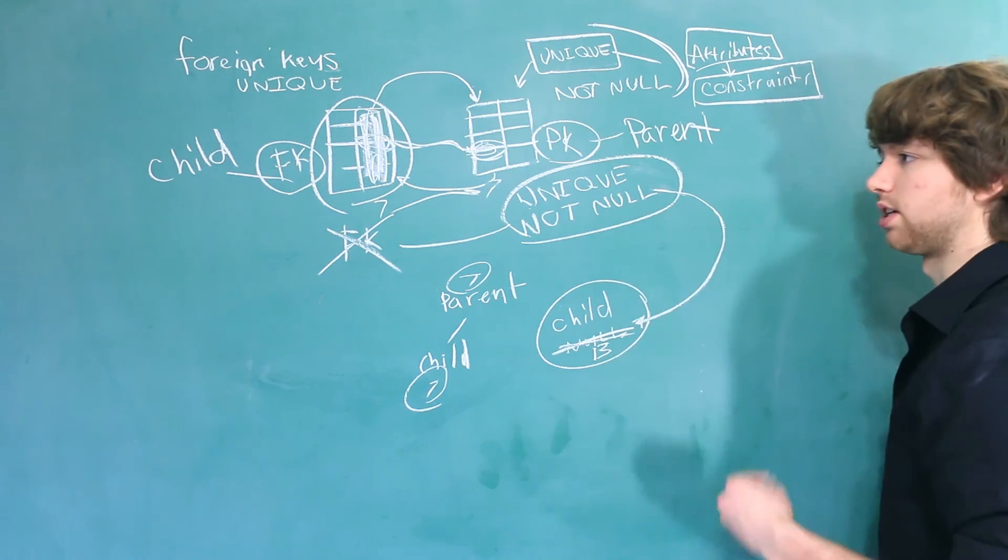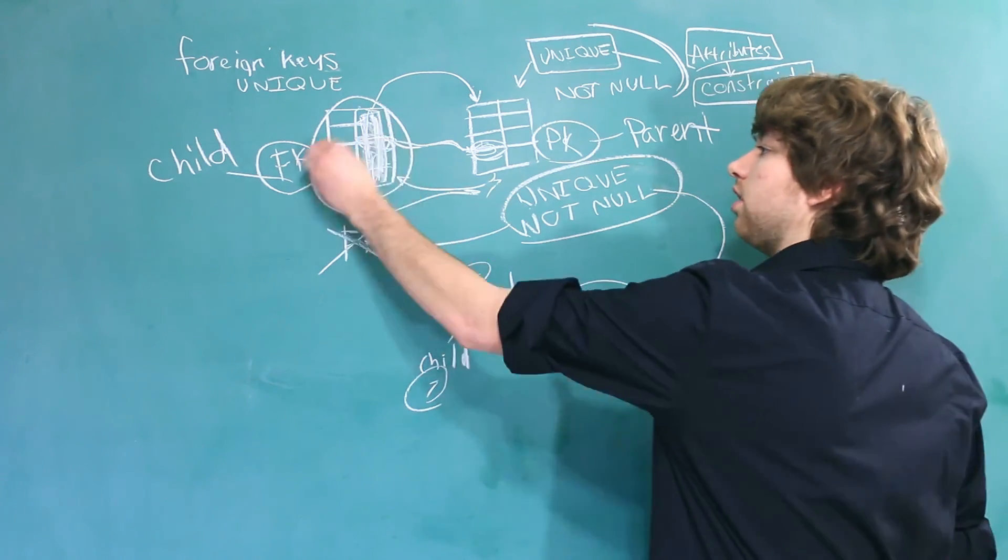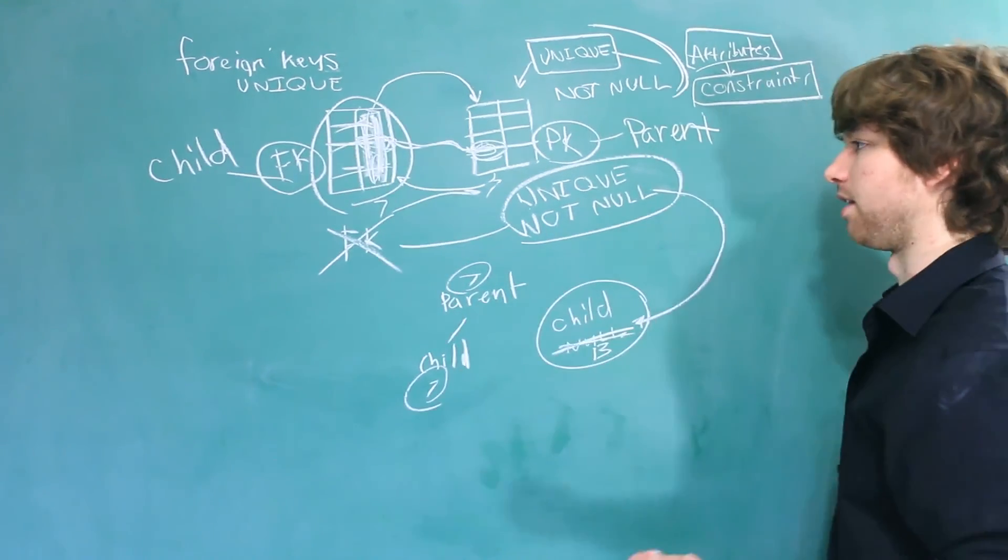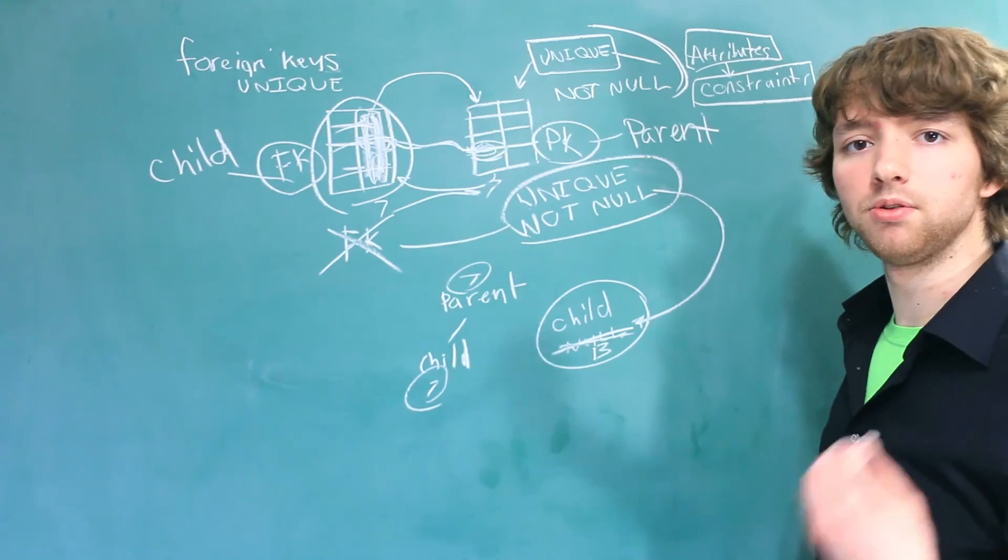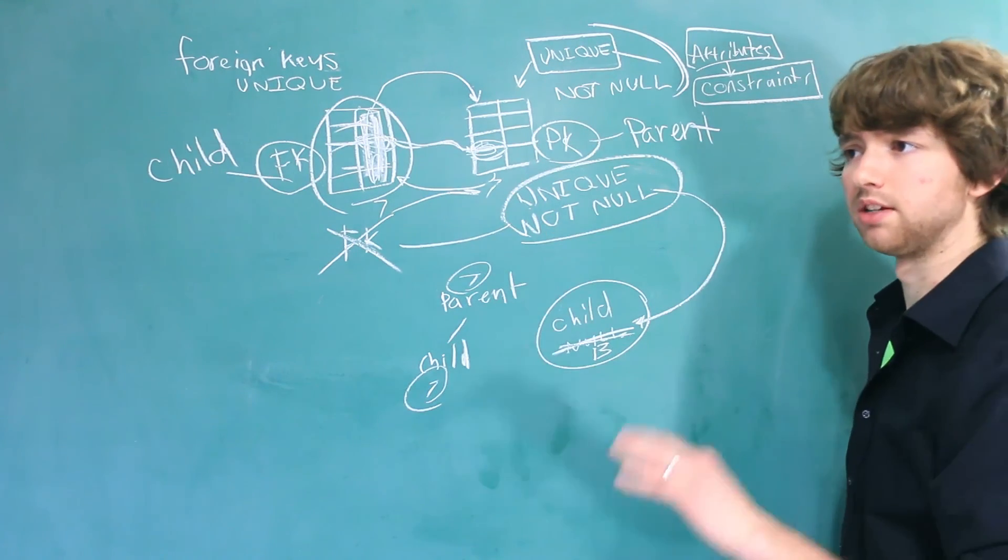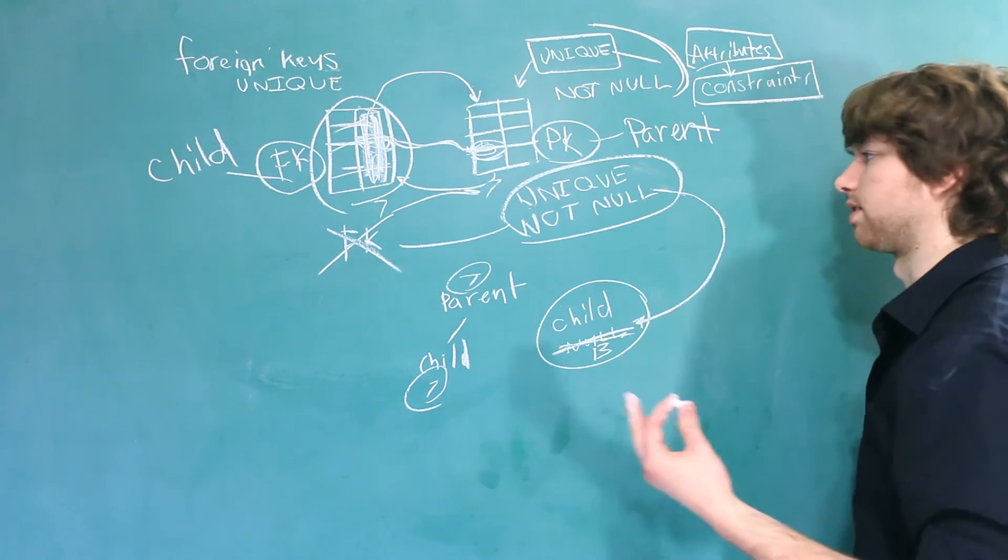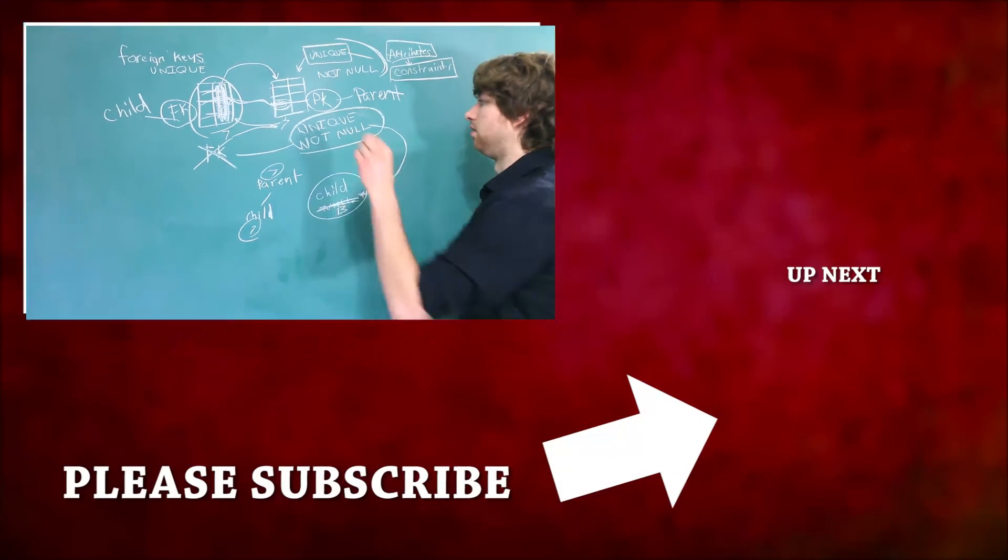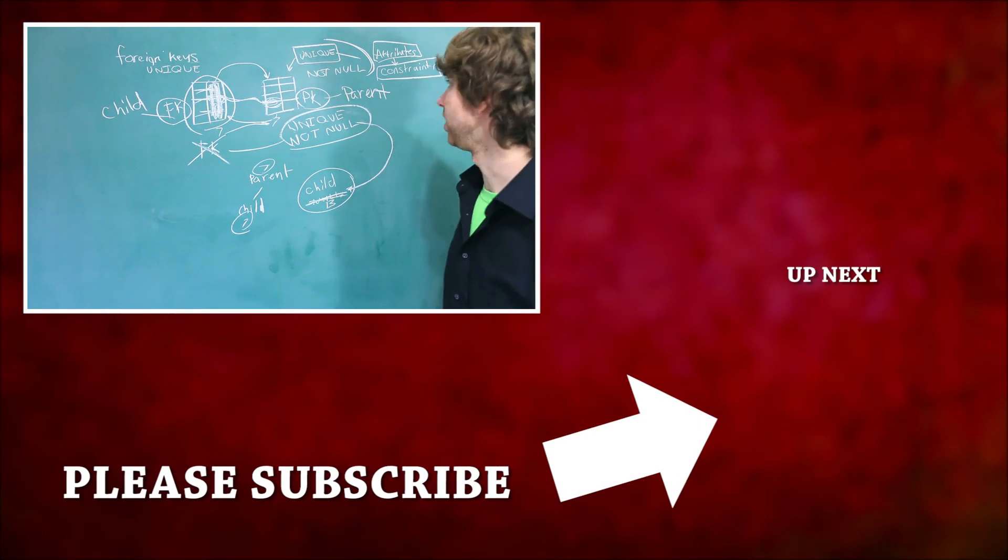You would do that if there's a situation when this row over here cannot exist without that parent. Think of like a comments table on a video sharing website. It wouldn't make sense to have a comment without a poster. So you would obviously make the poster column not null. So that's a good summary of attributes for foreign keys and how to design those.